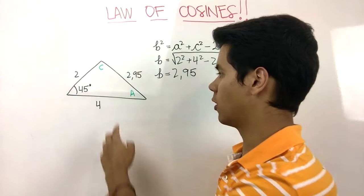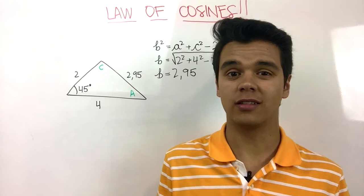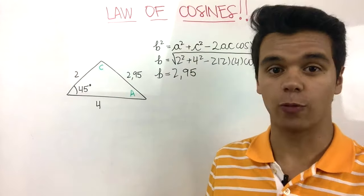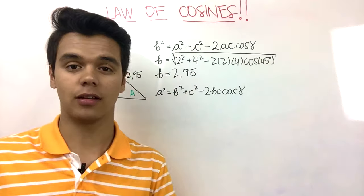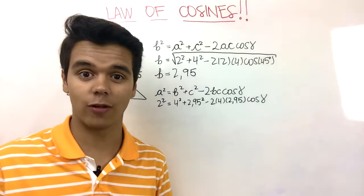Next, we have to solve for A or for C. We can solve for either one, it doesn't really matter, so I'm gonna pick A. We're gonna use the same formula, so let's substitute in our numbers and solve for our angle.